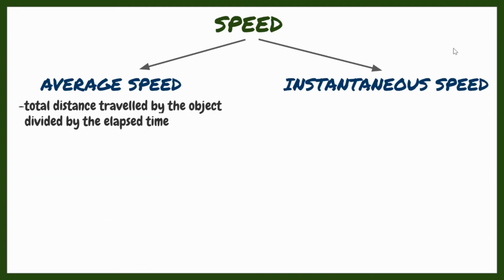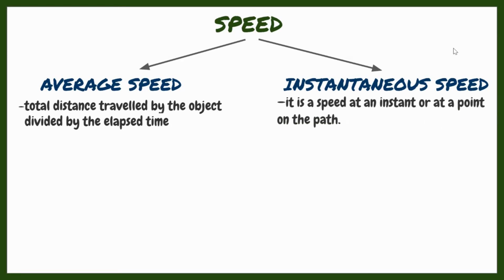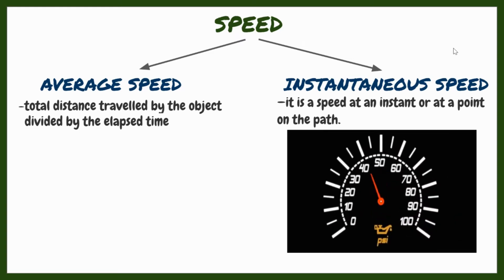Another type of speed is instantaneous speed. From its root word, instant — it is the speed at an instant or at a point on the path. For example, when you travel by car, you can look at the speedometer marking the speed at every moment of time. The speed varies quickly depending on how fast you are driving. That is instantaneous speed — it tells the rate of change in distance of an object with respect to time.